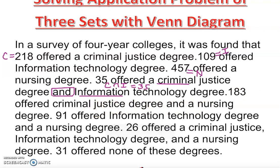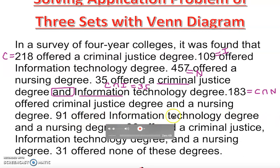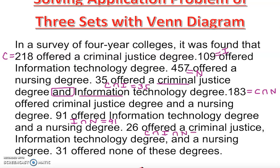183 offered criminal justice and nursing degree, so criminal justice intersect nursing equals 183. 91 offered information technology and nursing degree, so information technology intersect nursing equals 91. And 26 offered all three — criminal justice, information technology, and nursing — so all three intersect equals 26.